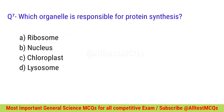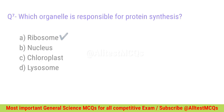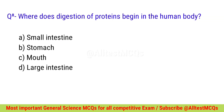Question number seven: Which organ is responsible for protein synthesis? Correct option is A — Ribosome. Question number eight: Where does digestion of proteins begin in the human body? Correct option is B — Stomach.